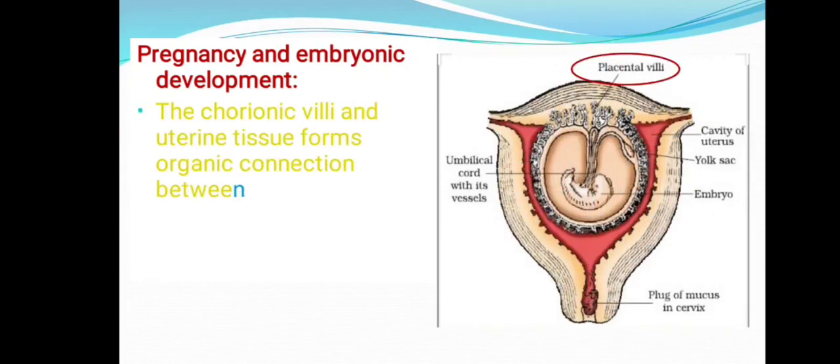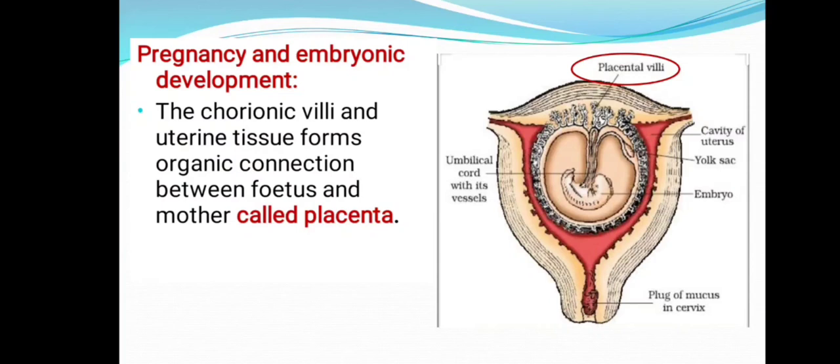The chorionic villi and uterine tissue form an organic connection between the fetus and mother, and this is now called the placenta.